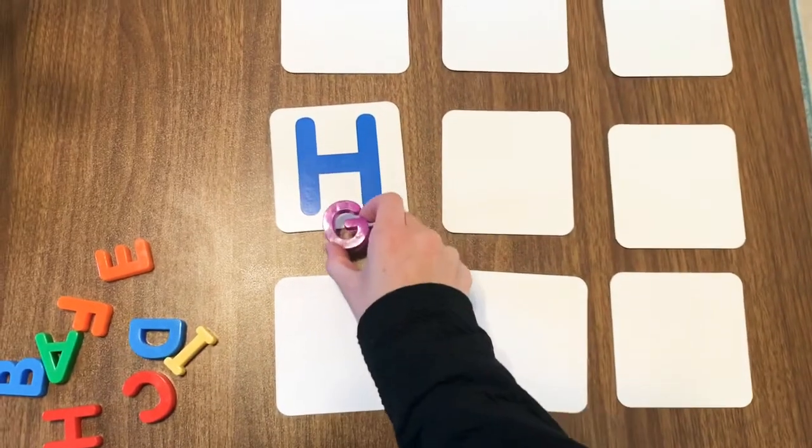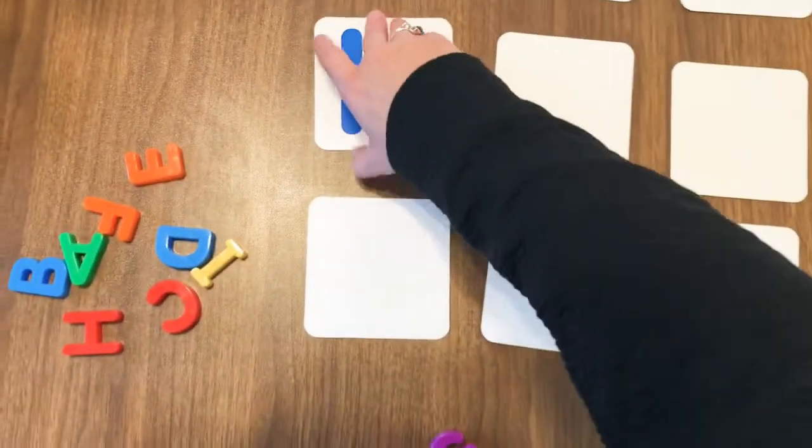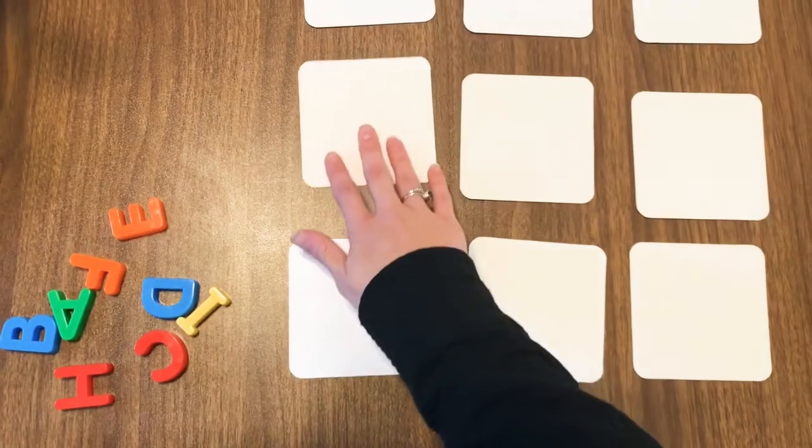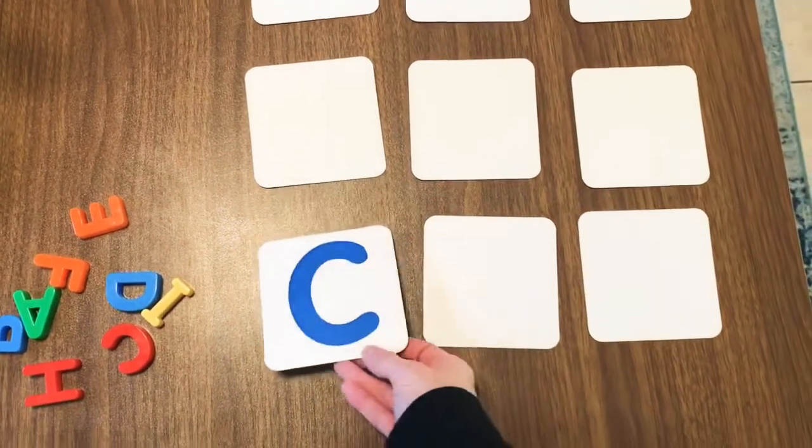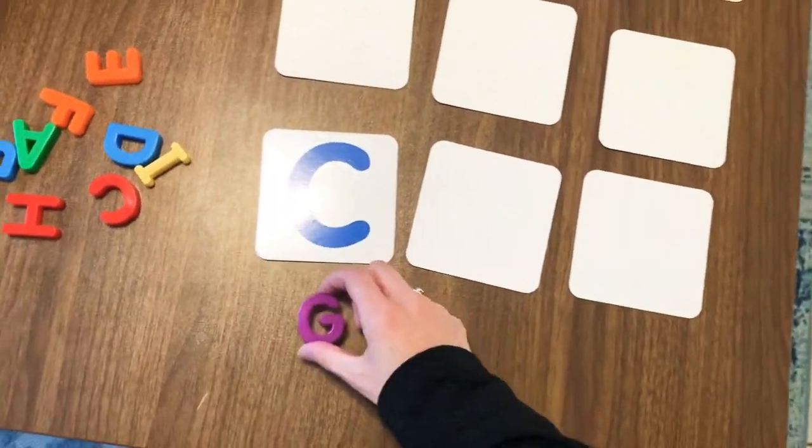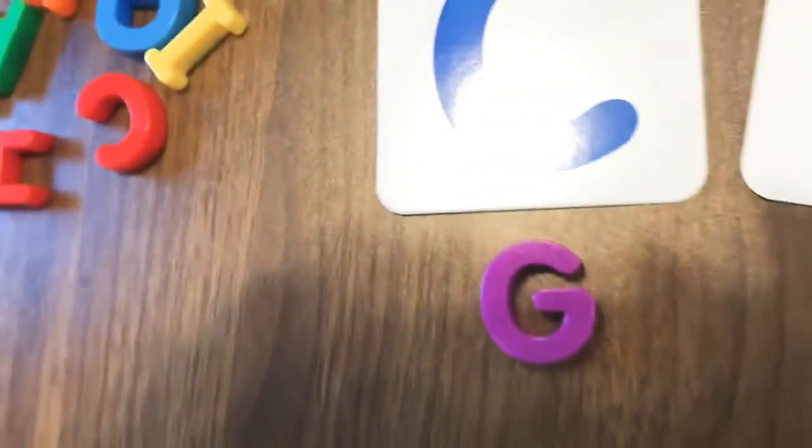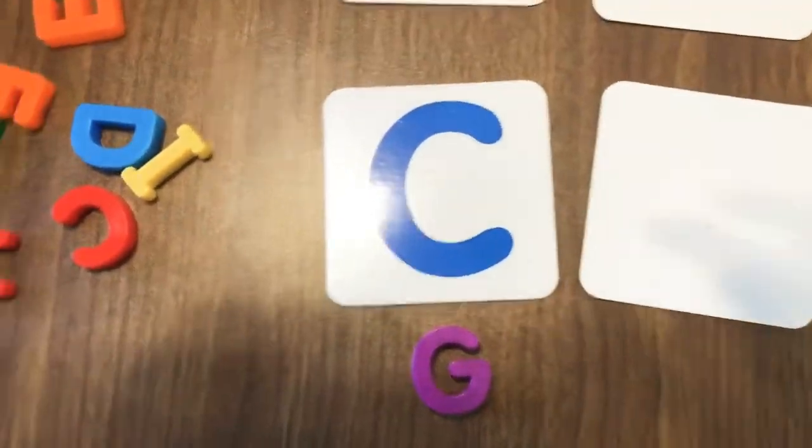Hmm, G? No, that's H. Ooh, it's kind of curved. It kind of looks like, oh, is that G? Nope, that's C.